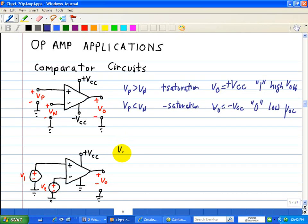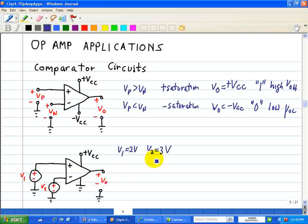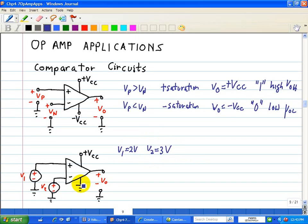Let's say V1 is equal to 2 volts, and V2 is equal to 3 volts. Since V2 is greater than V1, or VP less than VN, we say it goes into the zero saturation state, or the negative saturation state. And in this case, since the negative rail is zero volts, our output voltage is zero volts.